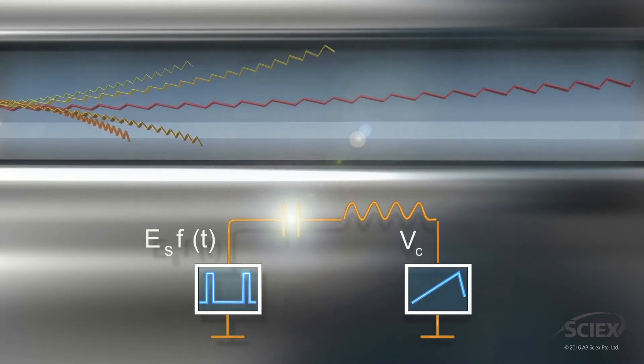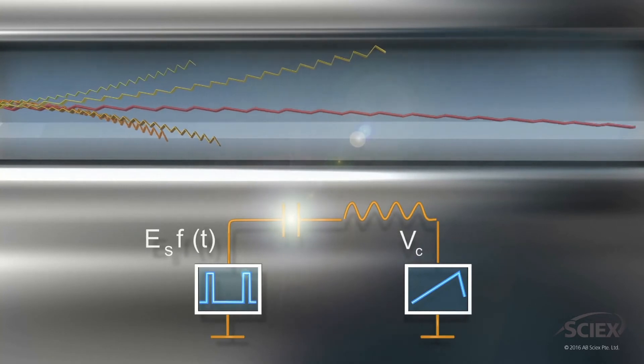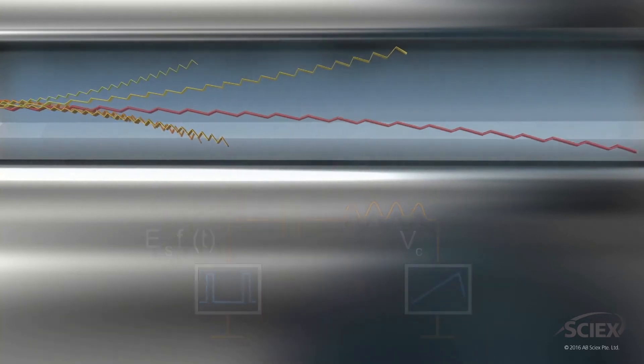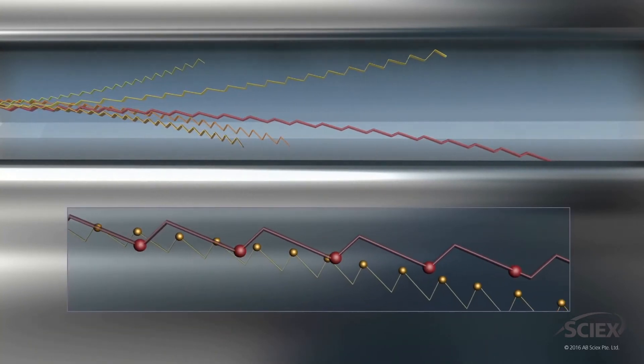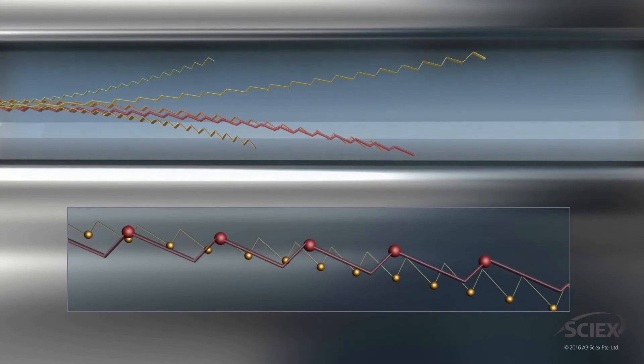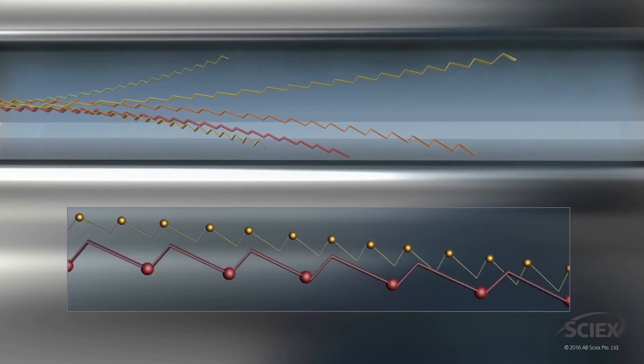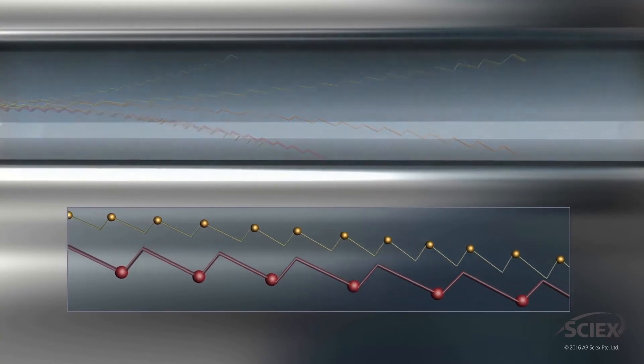The differential mobility of each compound is based on their respective size, shape, charge state, and chemical interactions rather than by mass, prior to entering the mass analyzer.